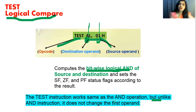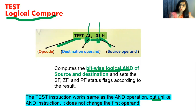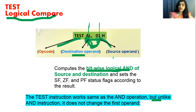What does 'it does not change the first operand' mean? It means that whatever the result of the AND operation is, that result will not get stored in the destination operand. In the AND instruction, the result is stored in the destination, but in the TEST instruction, the result is not stored — both the destination and source operands remain unchanged after execution.